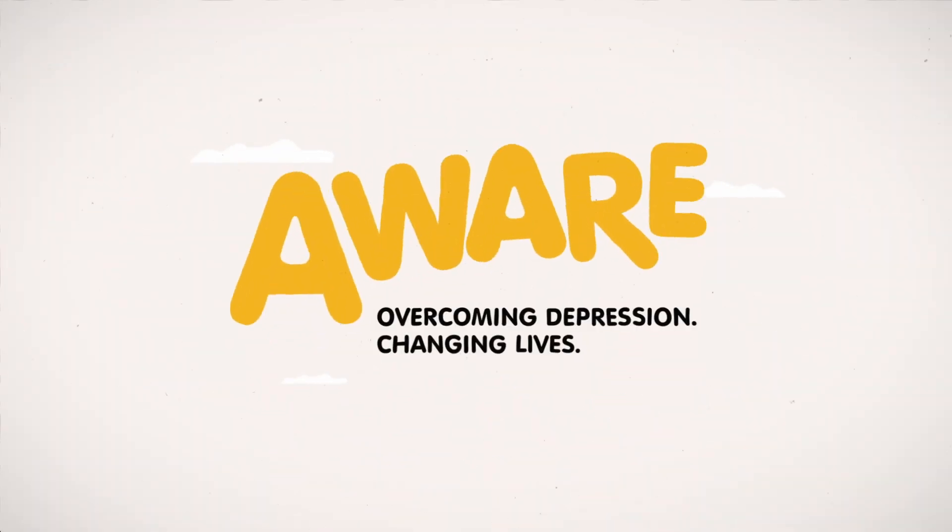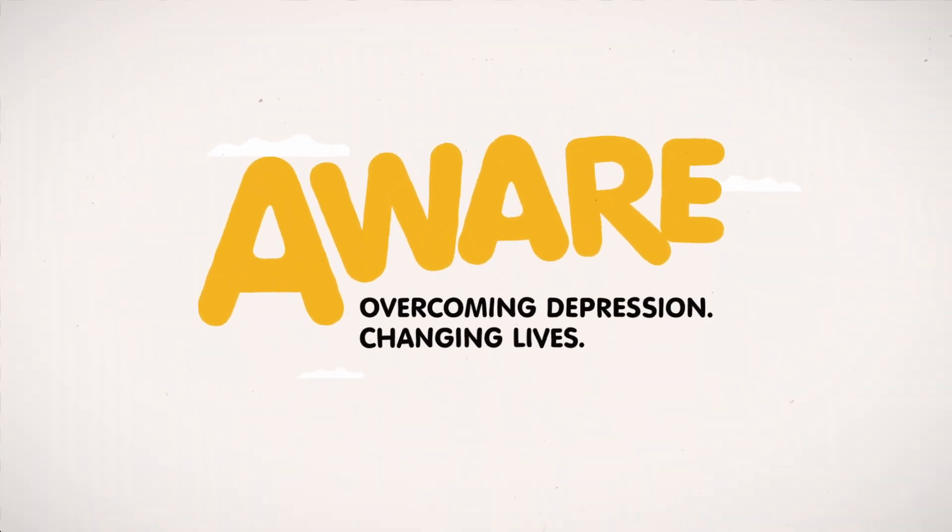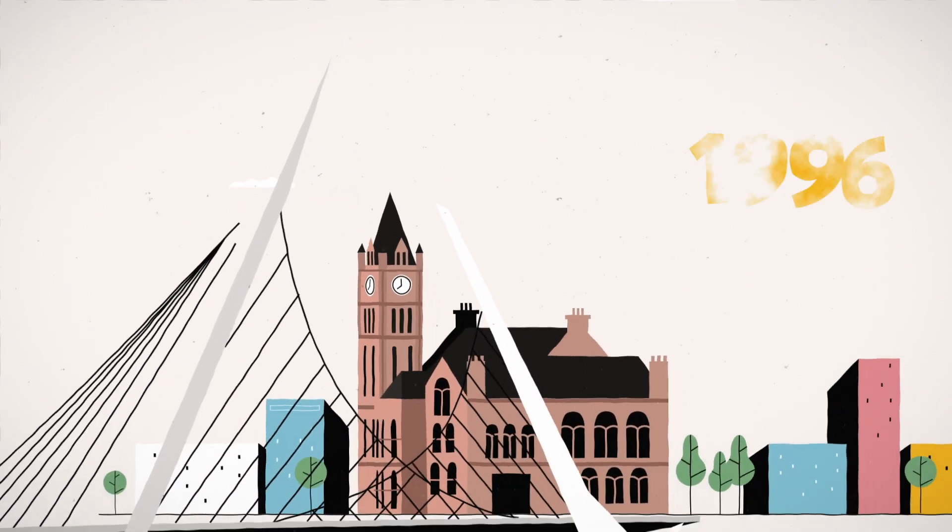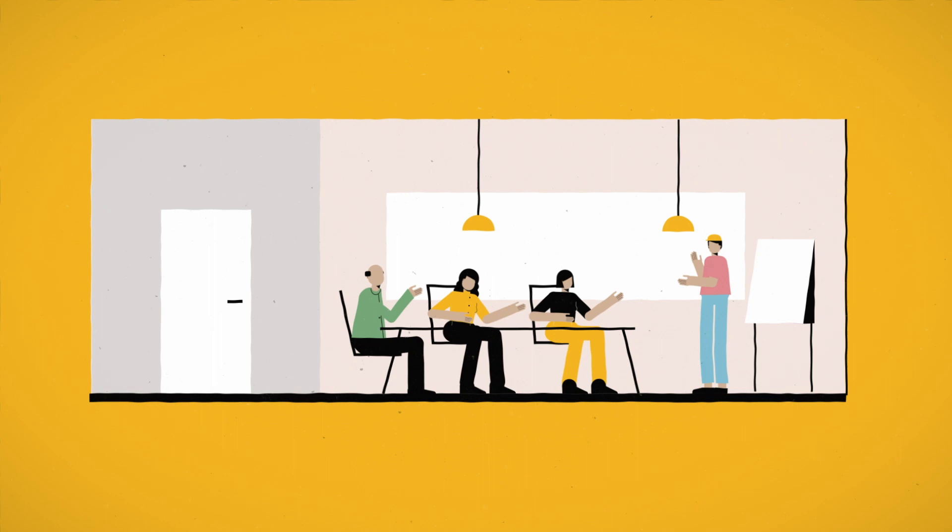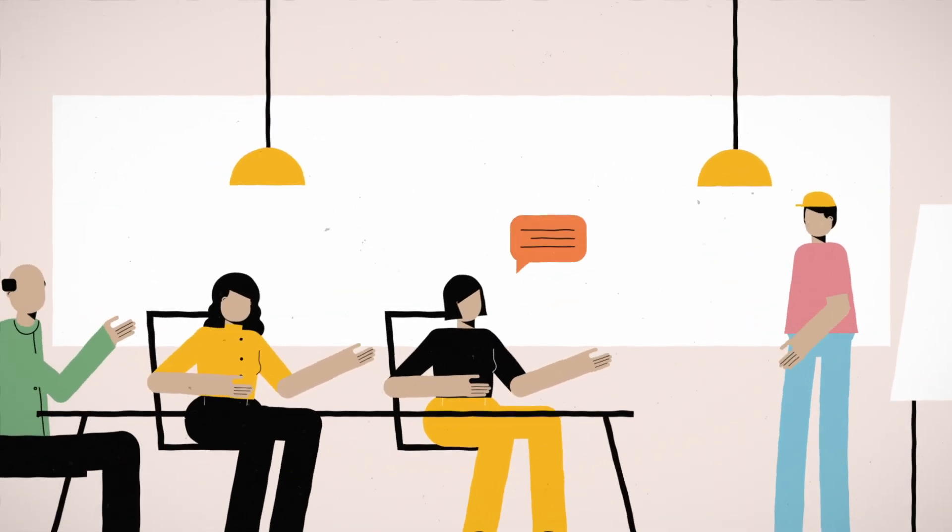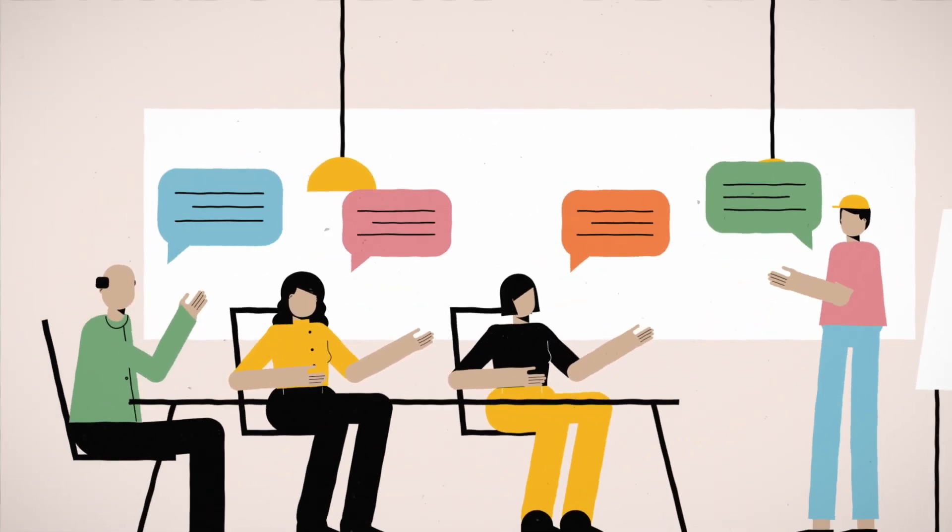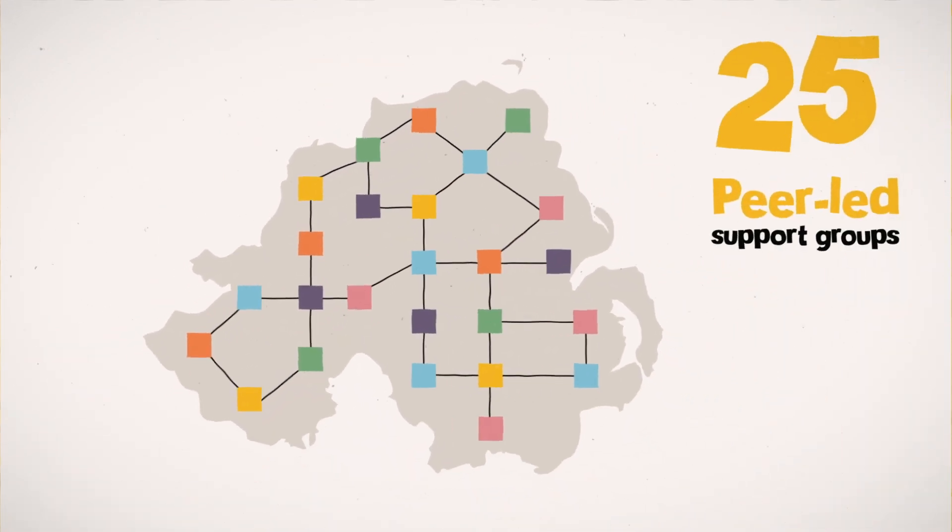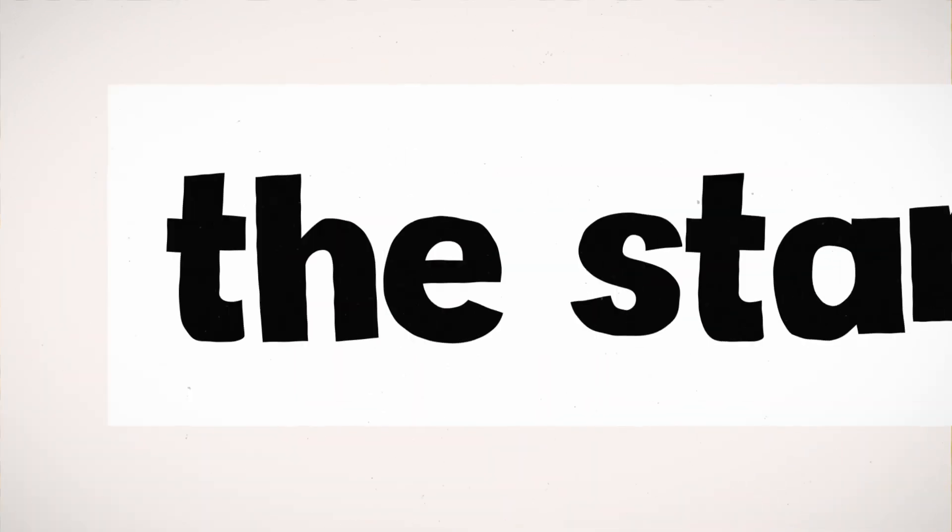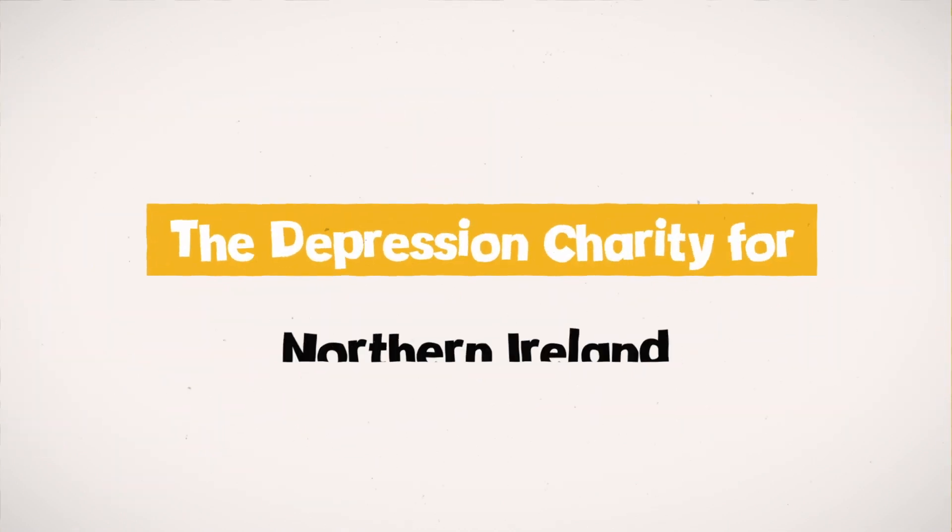At AWARE, we're trying to change that. Our story began in 1996 in Derry, Londonderry, when a small group of people came together with a shared vision to improve services for people with depression and bipolar disorder. This meeting led to the establishment of 25 peer-led support groups and the start of AWARE, the depression charity for Northern Ireland.